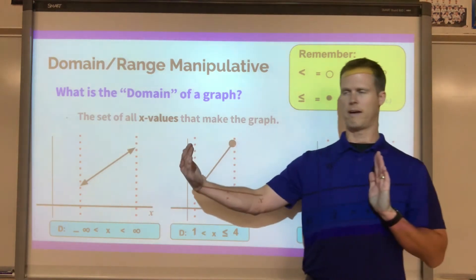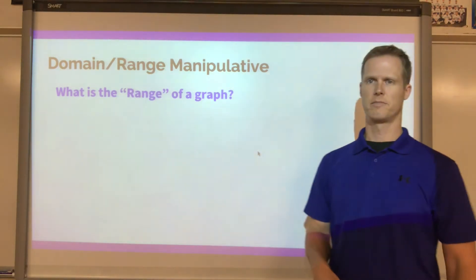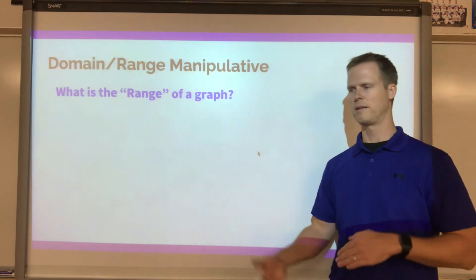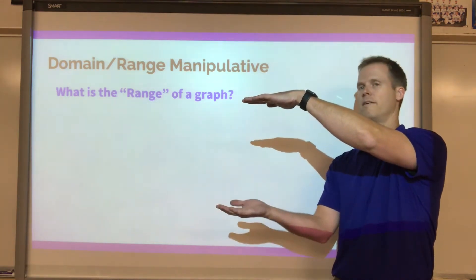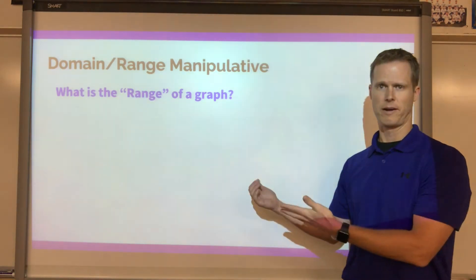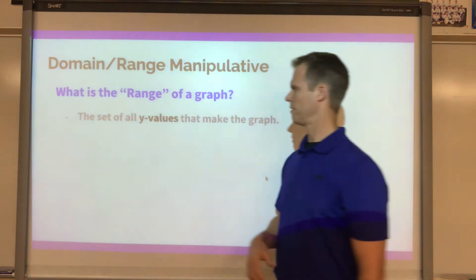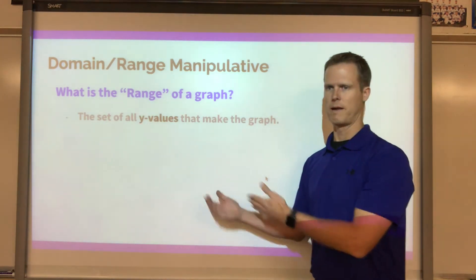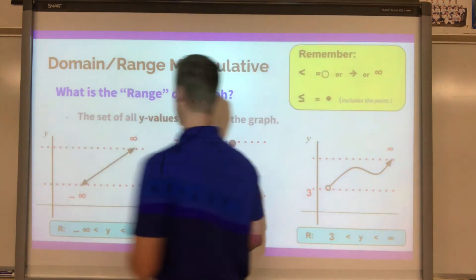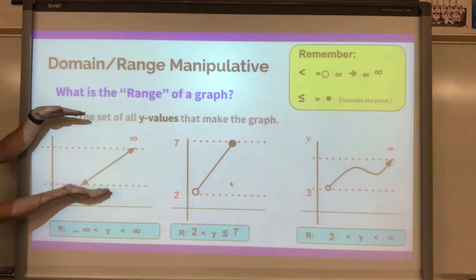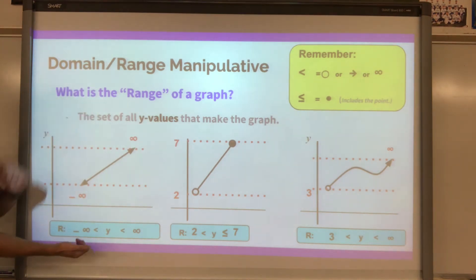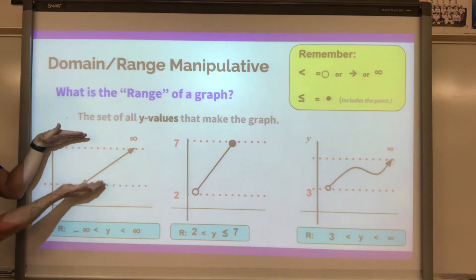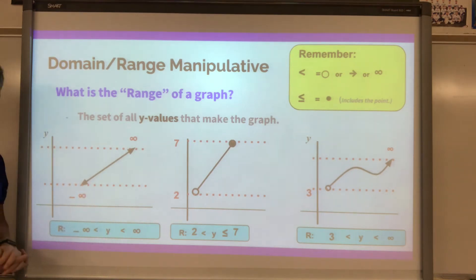That's domain — how wide is the graph. Now let's talk about range: how low is the bottom and how high is the top? Think of a floor coming up from the bottom and a ceiling coming down from the top. For the first graph, the floor hits an arrow at the bottom and the ceiling hits an arrow at the top, so the range goes from negative infinity to positive infinity. We don't use equal signs because we can't equal infinity.